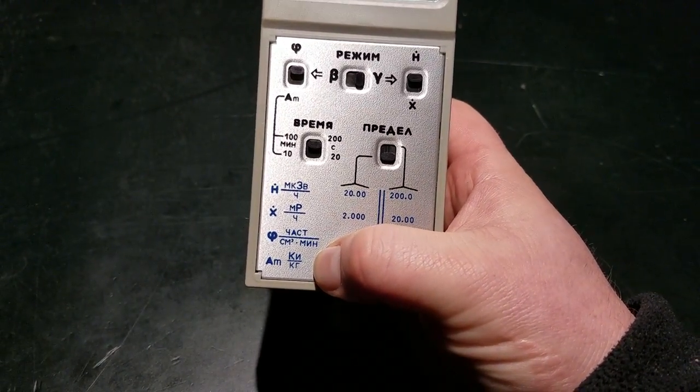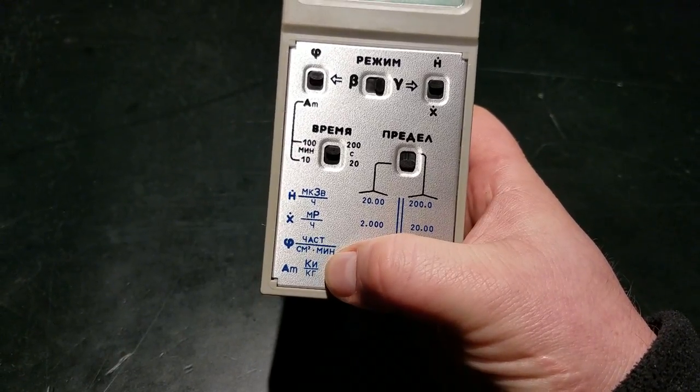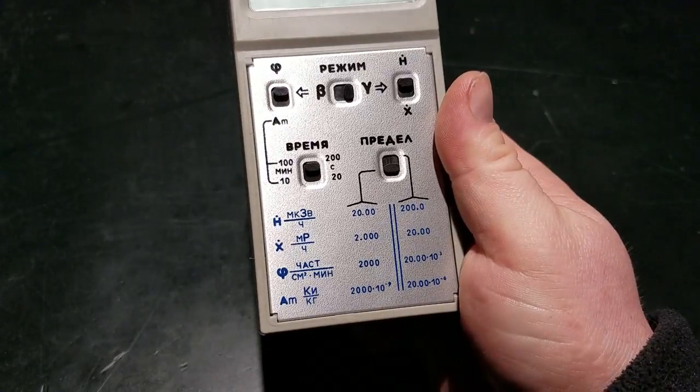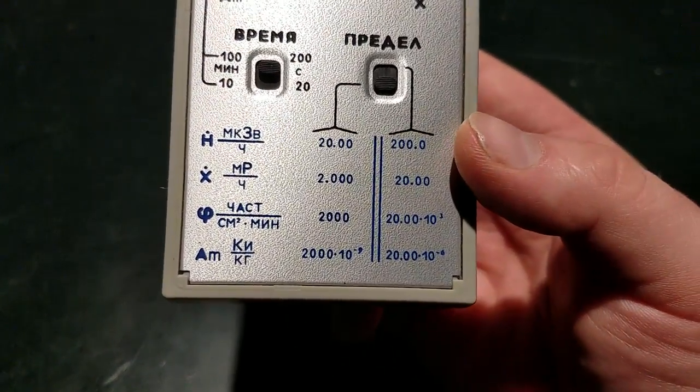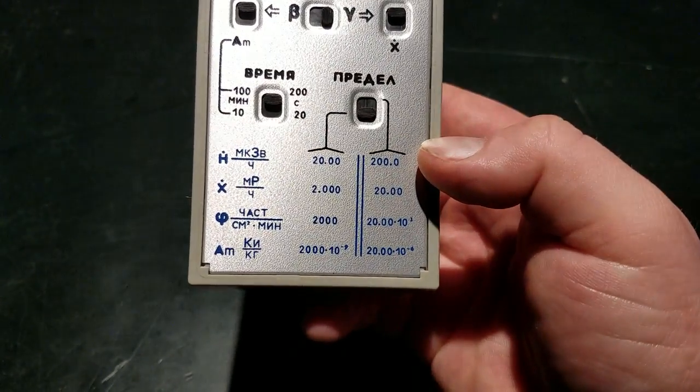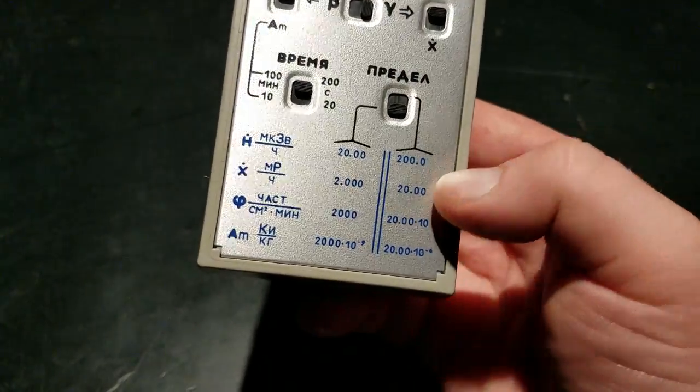That will actually include beta and gamma. And then here you have, I'm not sure how to use this yet exactly, but this is supposed to tell you how many curies per kilogram you're getting of activity. You can see the min and max for those two as well.